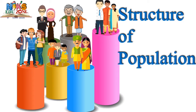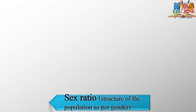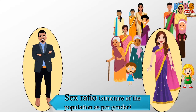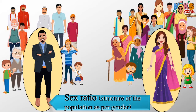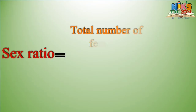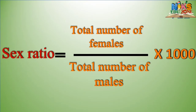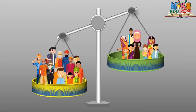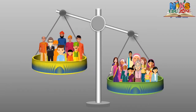Structure of population has several factors to consider. The first is sex ratio. As per gender, people can be divided into males and females. When both genders are around the same number, it indicates a balanced population. The sex ratio is calculated as: Sex Ratio = Total Number of Females ÷ Total Number of Males × 1,000. When for every 1,000 males the number of females is less, the sex ratio is said to be low; when it is more, the sex ratio is said to be high.